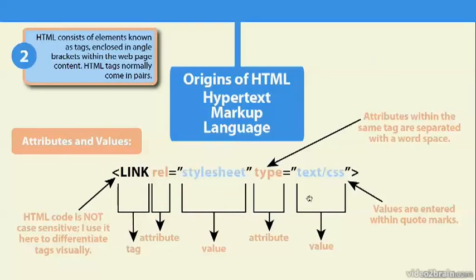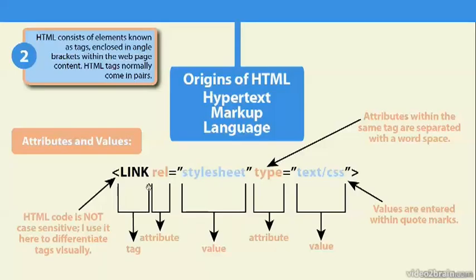Let's dive in and look a little bit closer at HTML tags. We also have things called attributes and values. You can see here I've got the link tag within the angle brackets, but I've also put attributes and values in here. An attribute is an option for that tag, and the value tells you which option we used. HTML code is not case sensitive — I use it here to differentiate tags visually. Some hand coders like to make the actual tag name caps and use lowercase for the rest.